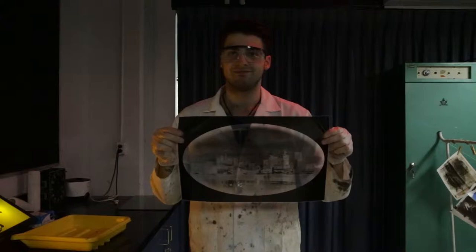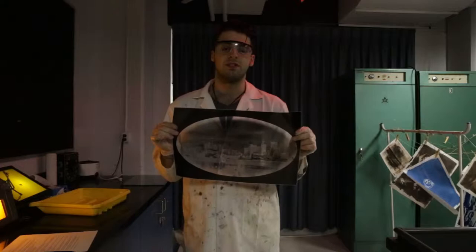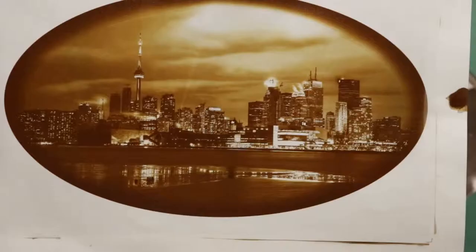Today we're going to make a Van Dyke print using a digital negative. When making a digital negative, it is recommended that you print with as much contrast as possible. The darker it is, the better it will turn out.